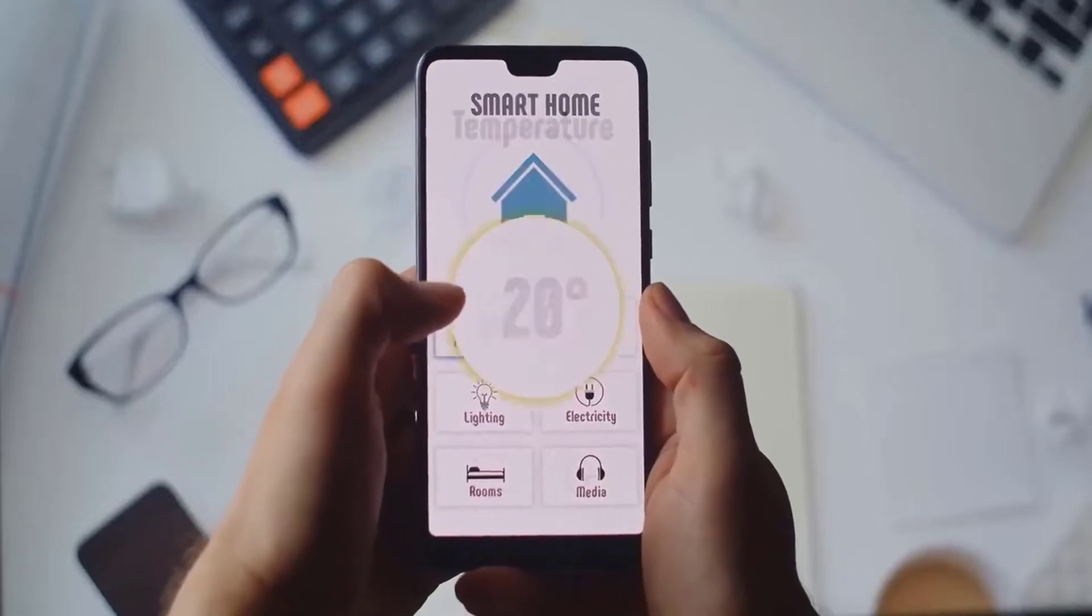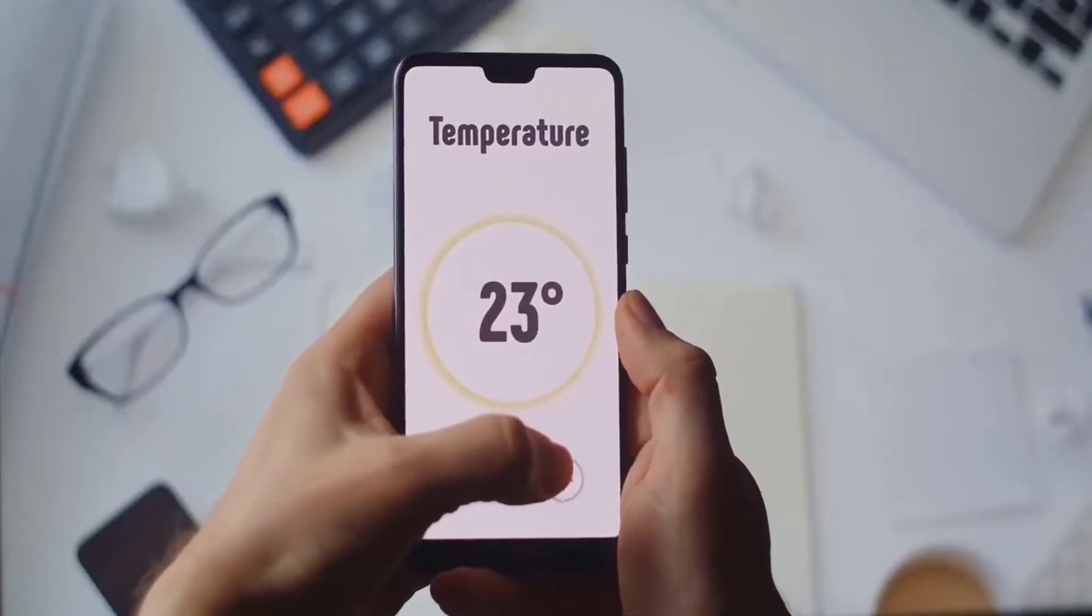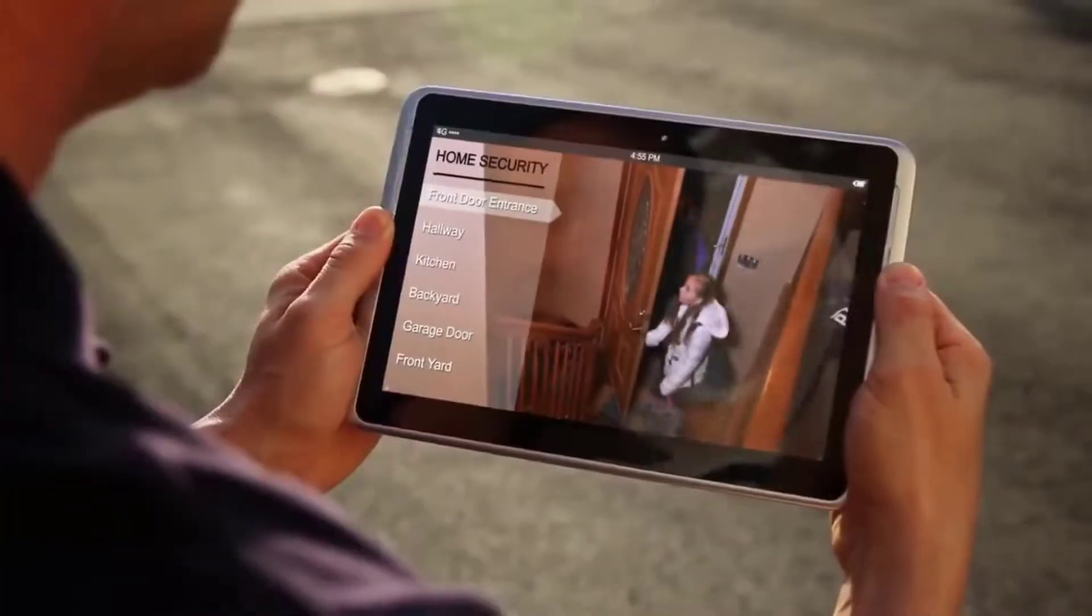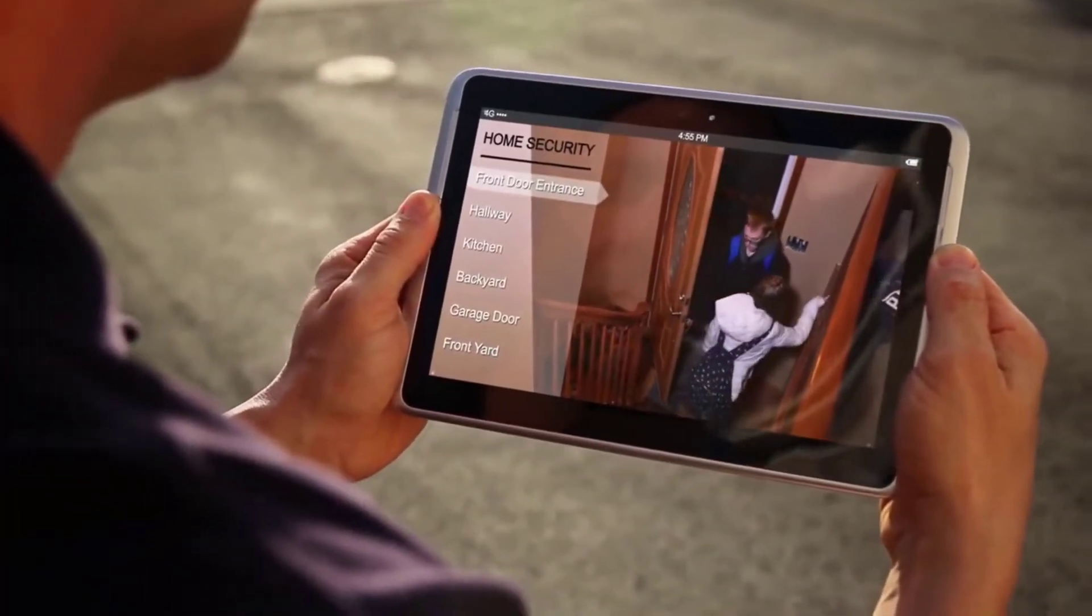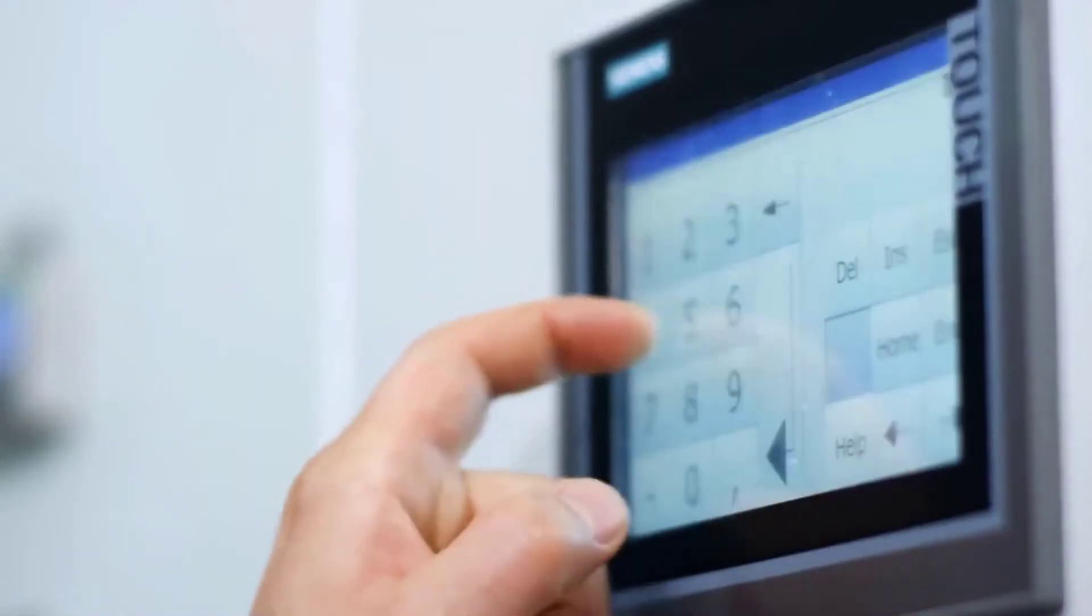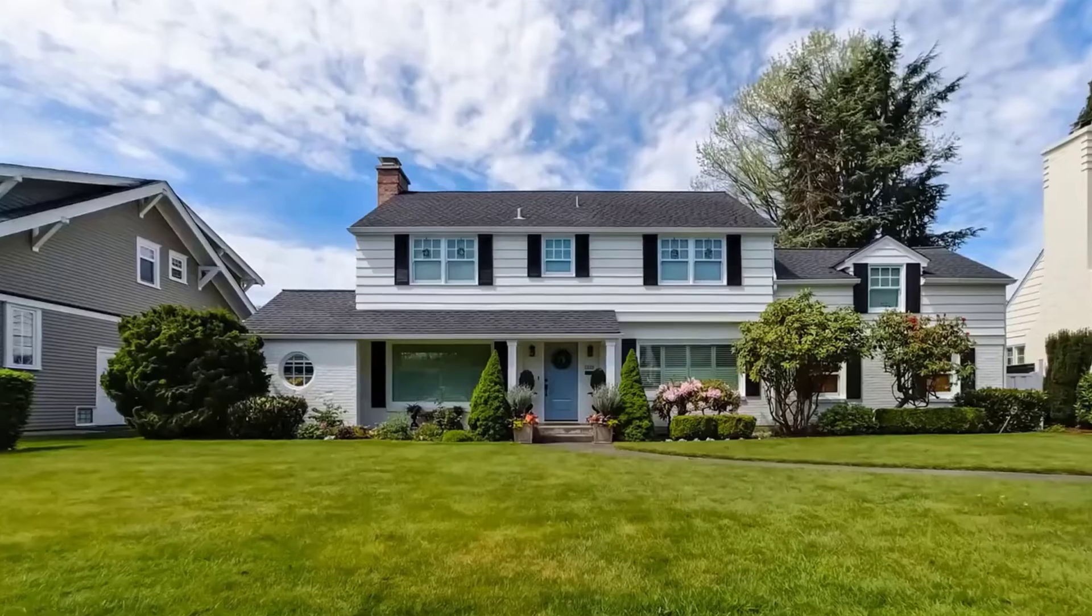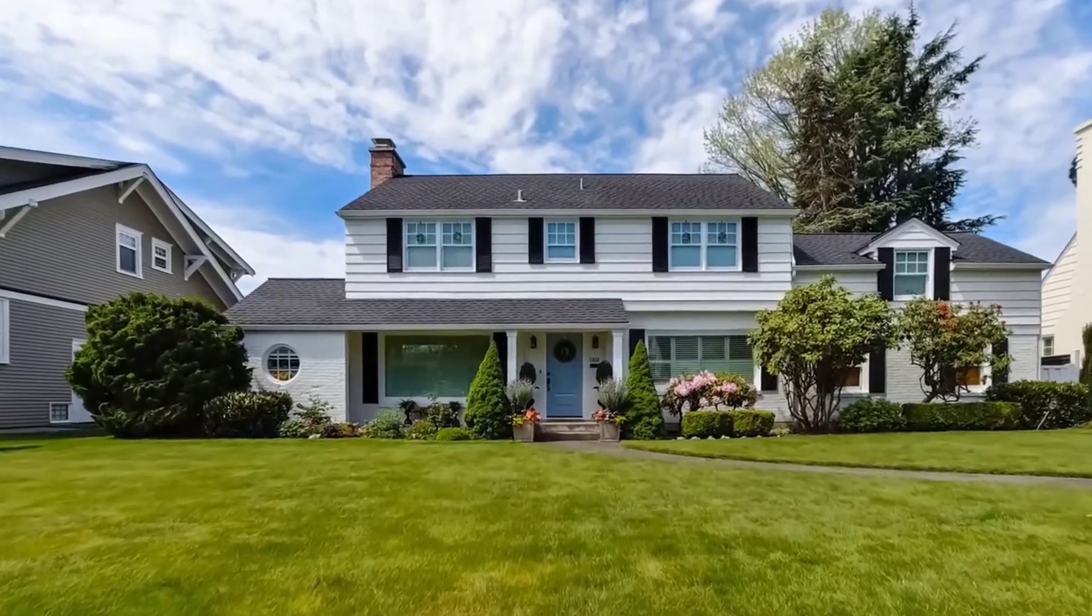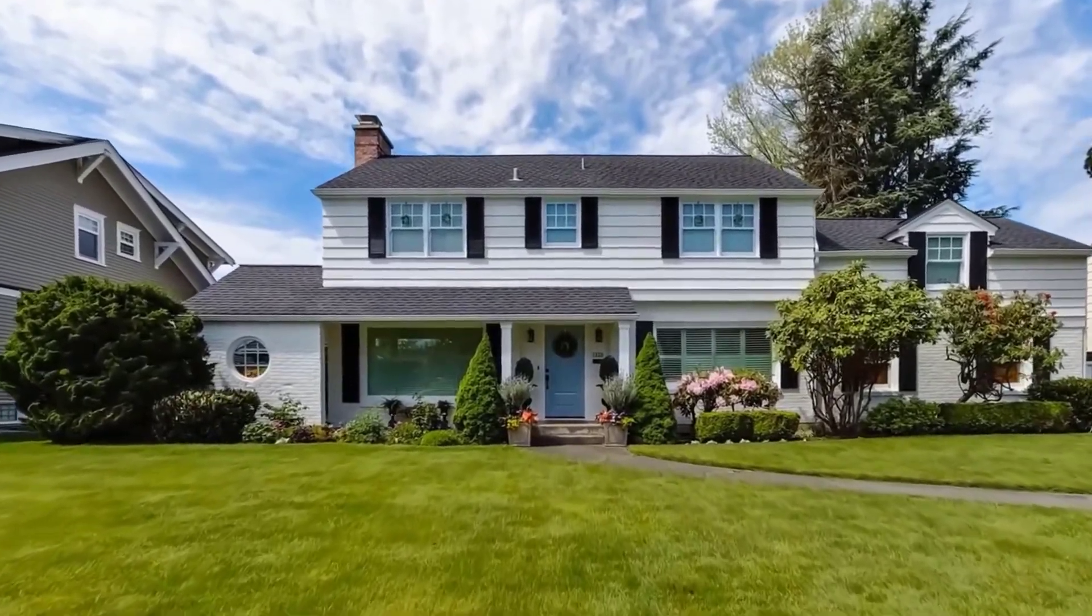For instance, you can save energy by monitoring and controlling your home's temperature and lighting remotely. You can also improve home security by setting up alerts and notifications for when doors or windows are opened. And if you have connected devices that use sensors, you can gather data about your home and its occupants that can be used to improve your home's comfort, safety, and efficiency.